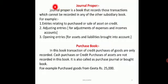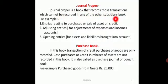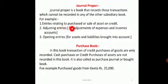Journal proper is a book that records those transactions which cannot be recorded in any other subsidiary books. It's a two-mark question: just write 'book which records transactions that cannot be recorded in other subsidiary books.' Examples include entries relating to purchase or sale of an asset on credit, and adjusting entries — for outstanding expenses, prepaid expenses, outstanding incomes, or amounts paid in advance — which are recorded in journal proper.